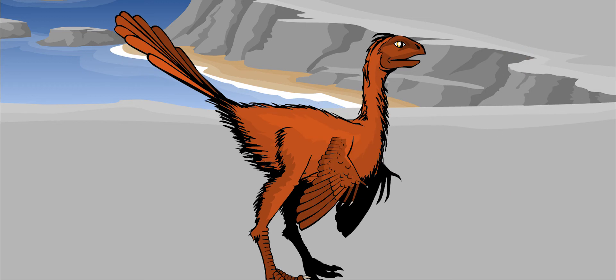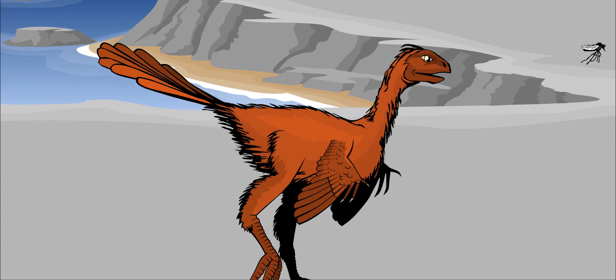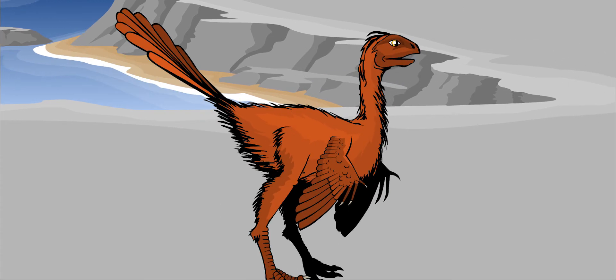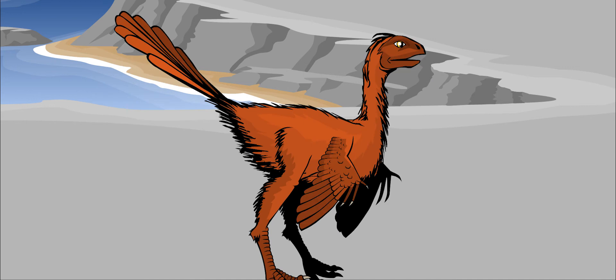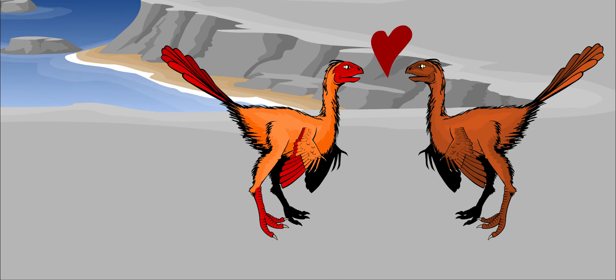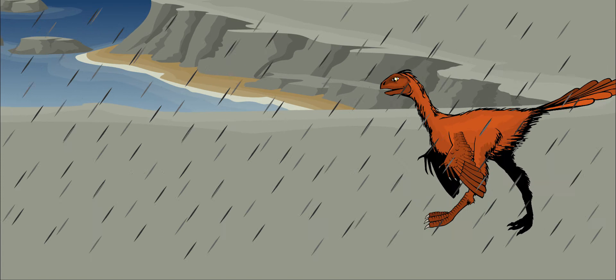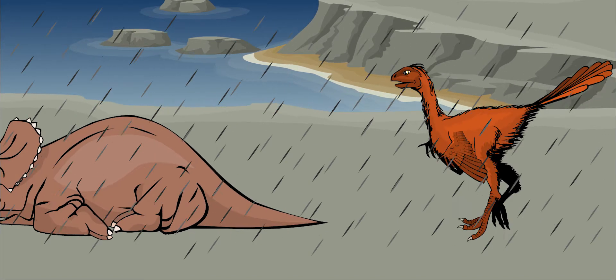But Caudipteryx couldn't use its wings to fly. What did it use its wings for? Some paleontologists believe that the wings were used to catch bugs, or the colorful feathers could have been used to attract a mate. The feathers may also have been good for keeping warm. This could be why Caudipteryx lived while so many of the other dinosaurs died.